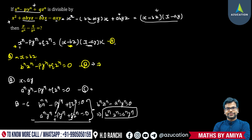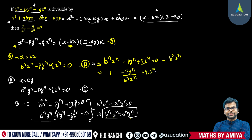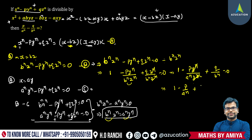We got one key result: bⁿzⁿ equals aⁿyⁿ. Now substitute into Expression B: bⁿzⁿ minus pYⁿ plus qZⁿ equals 0. Divide this entire expression by bⁿzⁿ, so we get 1 minus pYⁿ upon bⁿzⁿ plus qZⁿ upon bⁿzⁿ equals 0. The zⁿ terms cancel. Now we can replace bⁿzⁿ with aⁿyⁿ since both values are equal, and then yⁿ cancels out, giving us 1 minus p upon aⁿ plus q upon bⁿ equals 0.